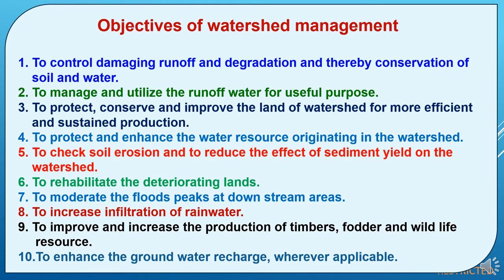The broad objectives of watershed management include: first, to control damaging runoff and degradation and thereby conserve soil and water. Second, to manage and utilize runoff water for useful purposes. Third, to protect, conserve and improve the land of the watershed for more efficient and sustained production. Fourth, to protect and enhance the water resources originating in the watershed. Fifth, to check soil erosion and reduce the effect of sediment yield on the watershed.